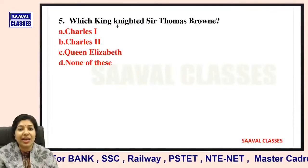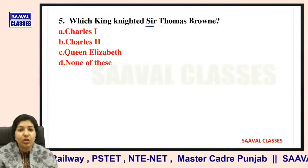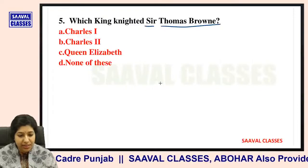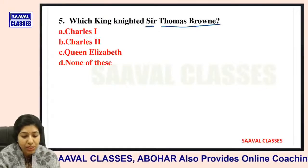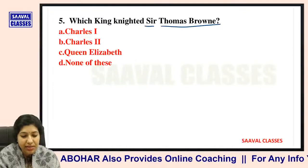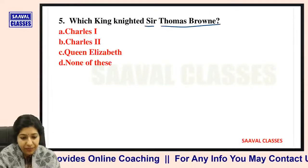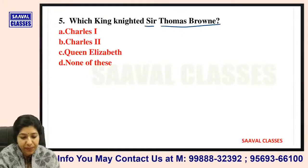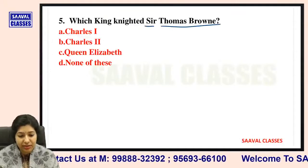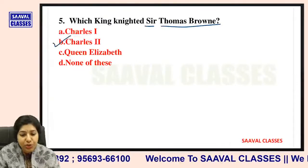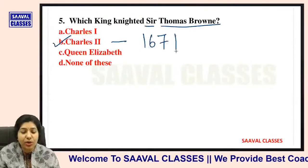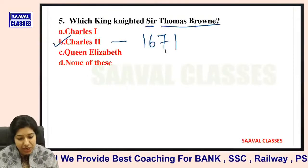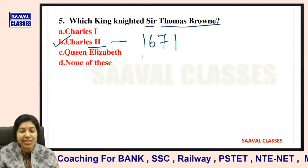Question number five: Which king knighted Sir Thomas Brown? Charles I, Charles II, Queen Elizabeth, or none of these? The answer is Charles II. He was knighted by King Charles II in 1671.